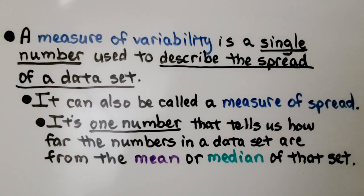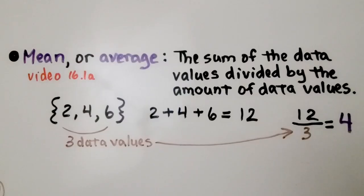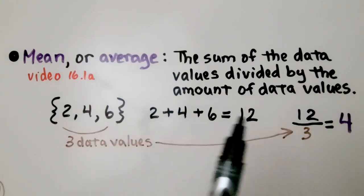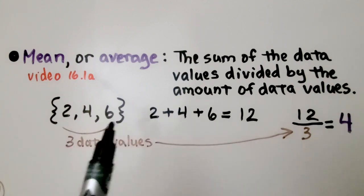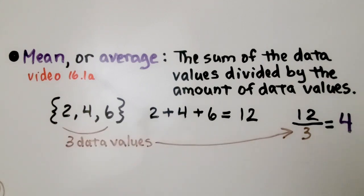It's one number that tells us how far the numbers in the data set are from the mean or median of that set. The mean or average is the sum of the data values divided by the amount of data values. For example, with three data values, we add them and get 12, divide it by 3, and we get 4 for our mean or average.